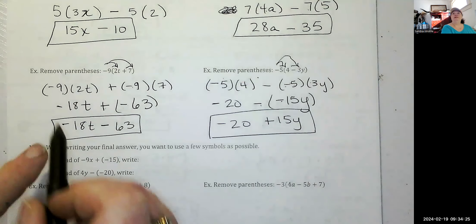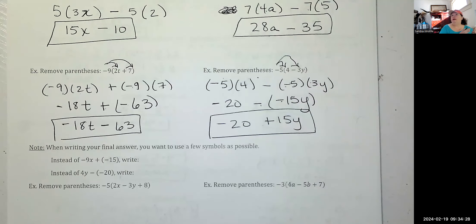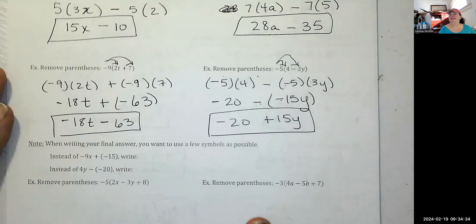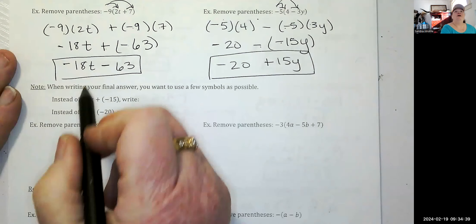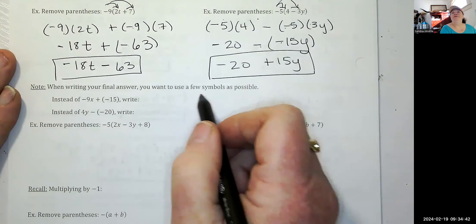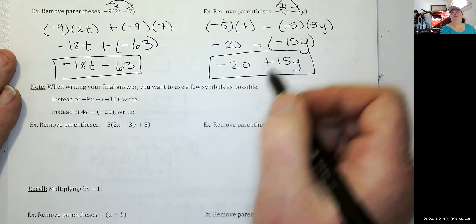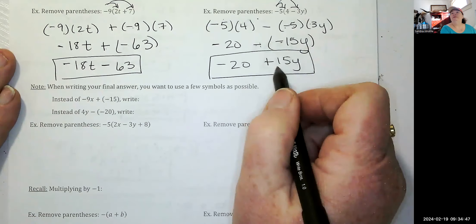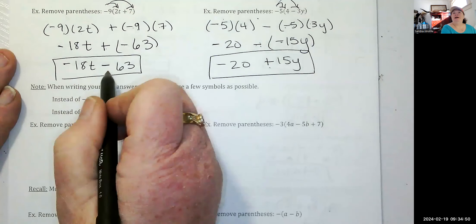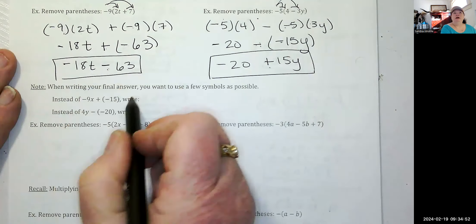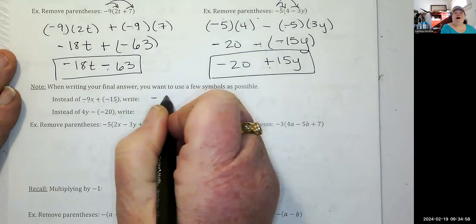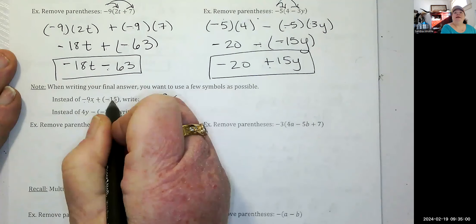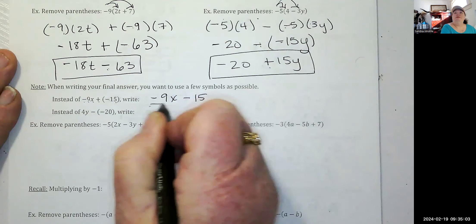Notice that some of these problems have the variable in the first term and this last one has the variable in the second term — that's okay. When writing your final answer, use as few symbols as possible. Instead of negative 9x plus negative 15, write negative 9x minus 15. And 4y minus negative 20 becomes 4y plus 20.